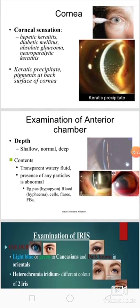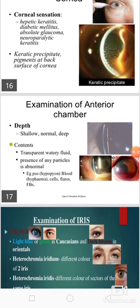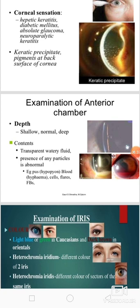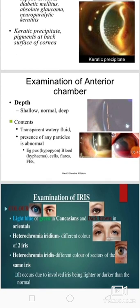Then we should do the examination of the anterior chamber. We should see the depth — whether it is shallow, normal, or deep. We should see the contents of the anterior chamber, whether transparent aqueous fluid is present or any abnormal particle is present. For example, pus may be present in case of hypopyon, or in case of hyphema blood is present, or in other cases cells, flare, or foreign bodies may be present.